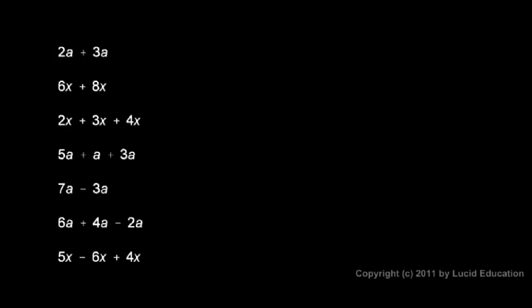2a plus 3a. Again, if it's difficult at all for you, think of the a as representing a thing. You can think of 2 apples plus 3 apples, and that's clearly equal to 5 apples. So 2a plus 3a is 5a.